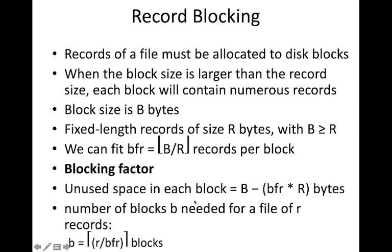The number of blocks needed for a file of R records is given by the ceiling of R divided by BFR: blocks = ⌈R/BFR⌉. This is important — you need to know what blocking factor is, how to calculate unused space, and how to calculate the number of blocks needed by a file.